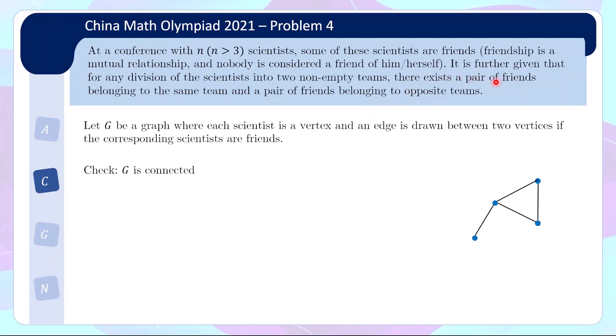Now what about the first condition that there will always exist a pair of friends belonging to the same team? This actually tells us that G is not bipartite. If G were bipartite, we can arrange the vertices into a bipartition — the left side and right side. Then there will be no edges on the left side and no edges on the right side, which contradicts the fact that there is a pair of friends belonging to the same team. So G is not bipartite, which is the same as saying that G has an odd cycle.